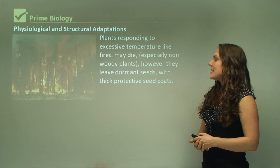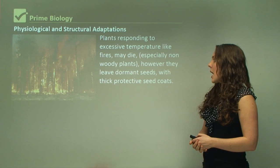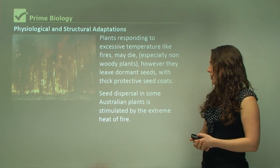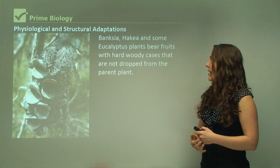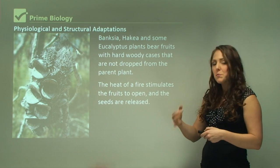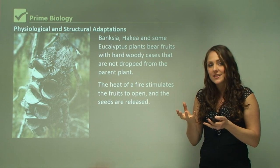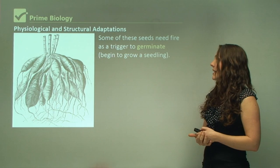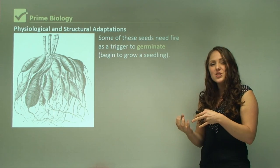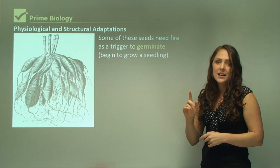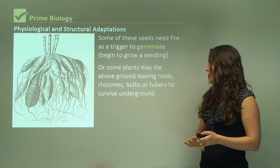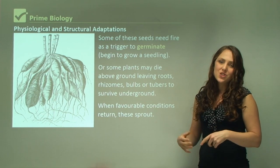Plants responding to excessive temperatures like fires may die, especially non-woody plants. However, they leave dormant seeds with thick protective seed coats. Seed dispersal in some Australian plants is stimulated by the extreme heat of fire. Banksia, Acacia, and some eucalyptus plants bear fruits with hard woody cases; the heat from a fire stimulates the fruits to open and seeds are released — so only with fire are seeds released. Some of these seeds need fire as a trigger to germinate. Some plants may die above ground, leaving roots such as rhizomes, bulbs, or tubers to survive underground, and when favorable conditions return they can sprout.